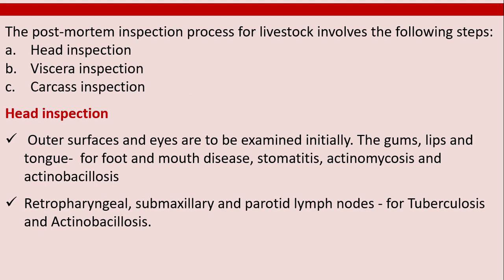The post-mortem inspection process for livestock involves the following steps: head inspection, viscera inspection, and carcass inspection. In head inspection, outer surfaces and eyes are examined initially, followed by the gums, lips, and tongue for foot and mouth disease, stomatitis, actinomycosis, and actinobacillosis.